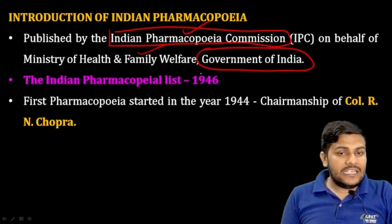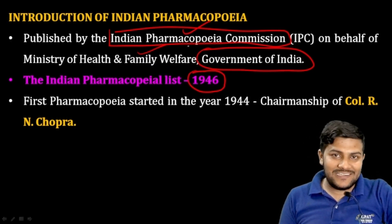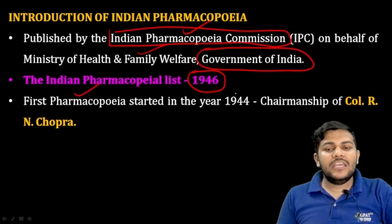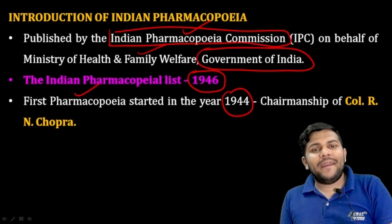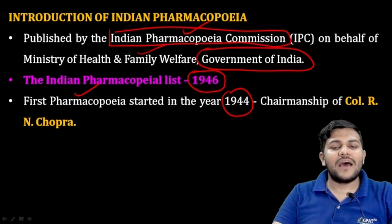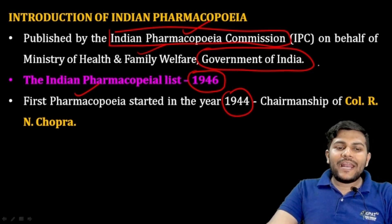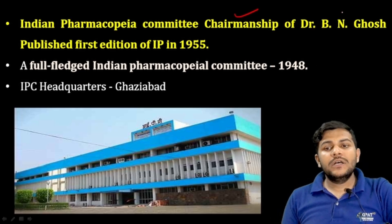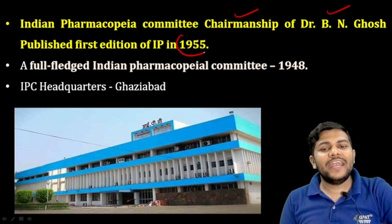The Indian Pharmacopoeia list was prepared in the year 1946, before independence. Work started in 1944 under the chairmanship of Col. R.N. Chopra. The first Indian Pharmacopoeia Committee was formed in 1948, with Dr. B.N. Gosh as chairman, and the first edition was published in 1955.